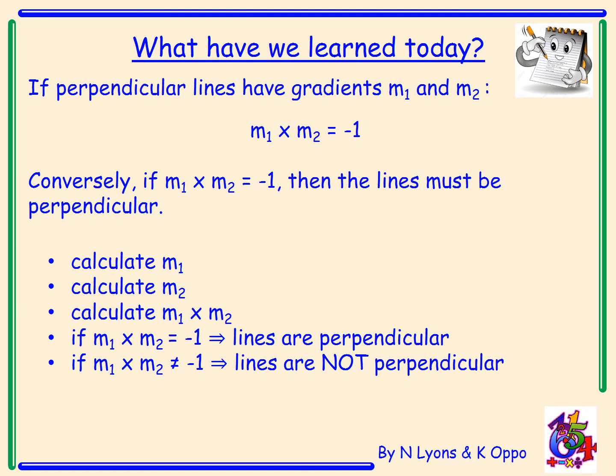The steps we can use for problem solving are: To calculate the gradient of line 1, m1. Calculate m2. Calculate m1 times m2. If m1 times m2 equals minus 1, then the two lines are perpendicular. And if m1 times m2 does not equal minus 1, then the lines are not perpendicular.